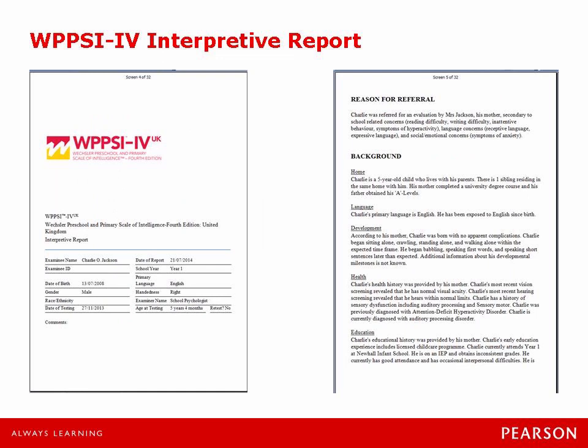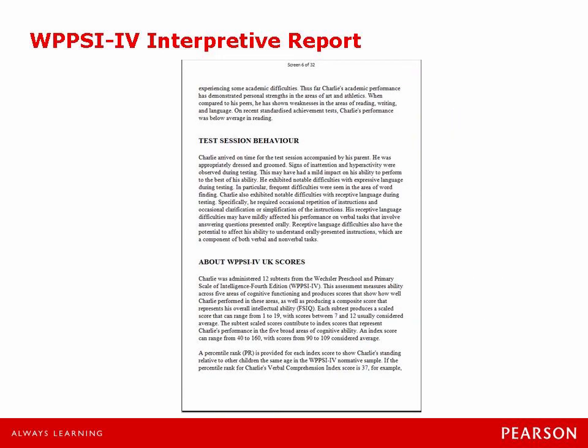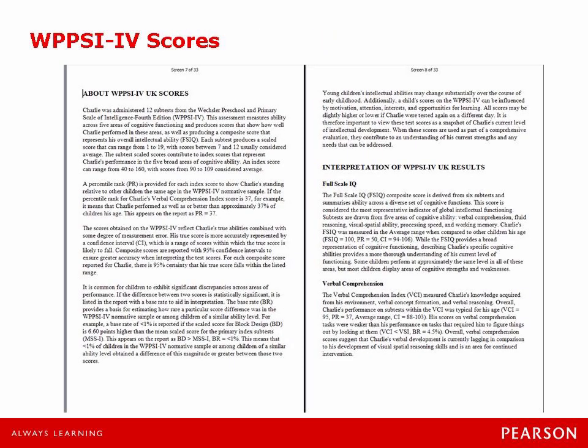All I have to do is flip to the next page and what you see is the demographic information and the first page of all of the referral background information — just making sure that all the information here for Charlie is correct. You can see on the second page that the more information that I put in at the beginning when I was setting up Charlie's profile, the more information is going to be in the report. So you see all of the information here that I put in regarding his home, language development, health and education are in this report. You can actually cut and paste these into your larger report, add to them, or type in additional information if you want.